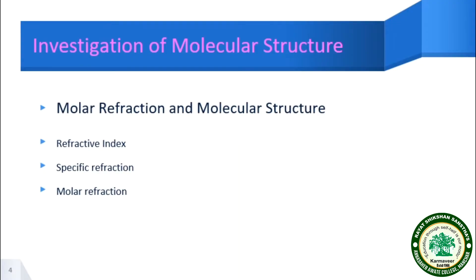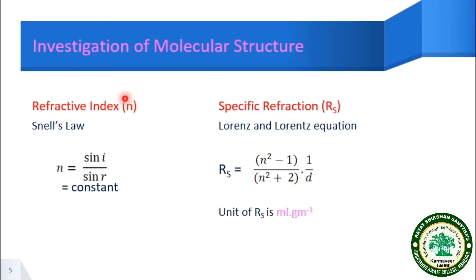Now we consider the very first simple physical property — molar refraction — and how it is related to molecular structure. To understand molar refraction, we go through different stages: first we introduce the refractive index, then specific refraction, then molar refraction. The refractive index is represented by small letter n, given by n = sin(i) / sin(r), and this is always constant for a particular medium.